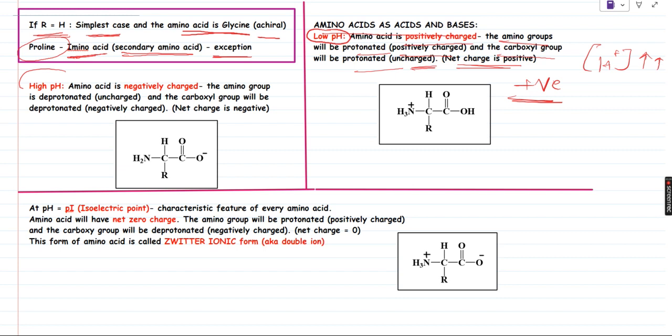Under the high pH condition, the amino acid will be negatively charged. Because under high pH, the OH- ion concentration is going to be very high. So the amino group is going to be deprotonated and hence will be uncharged, remaining as NH2 itself. And the carboxyl group will be deprotonated — it will furnish out its H+ ion and will be negatively charged in the form of COO- ion. Hence the net charge is going to be negative.